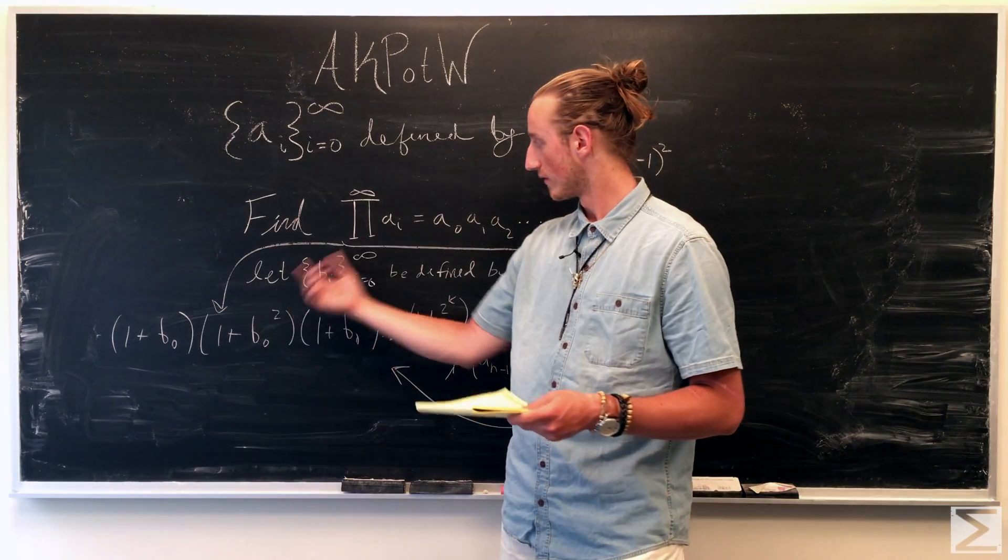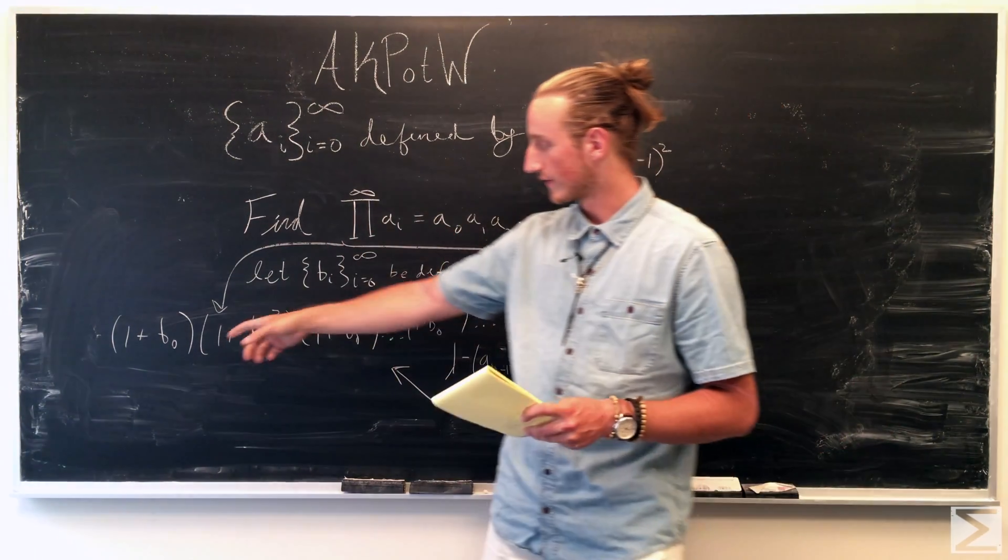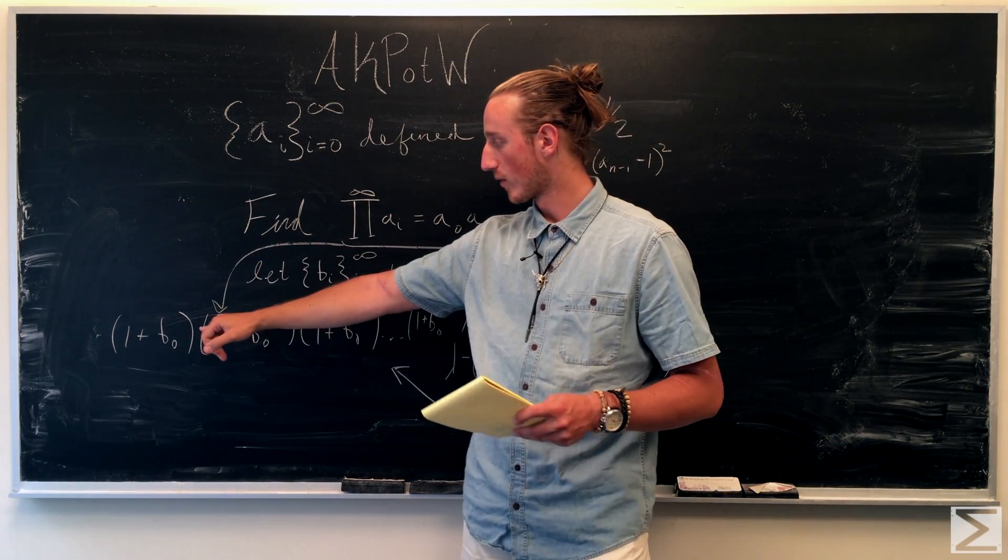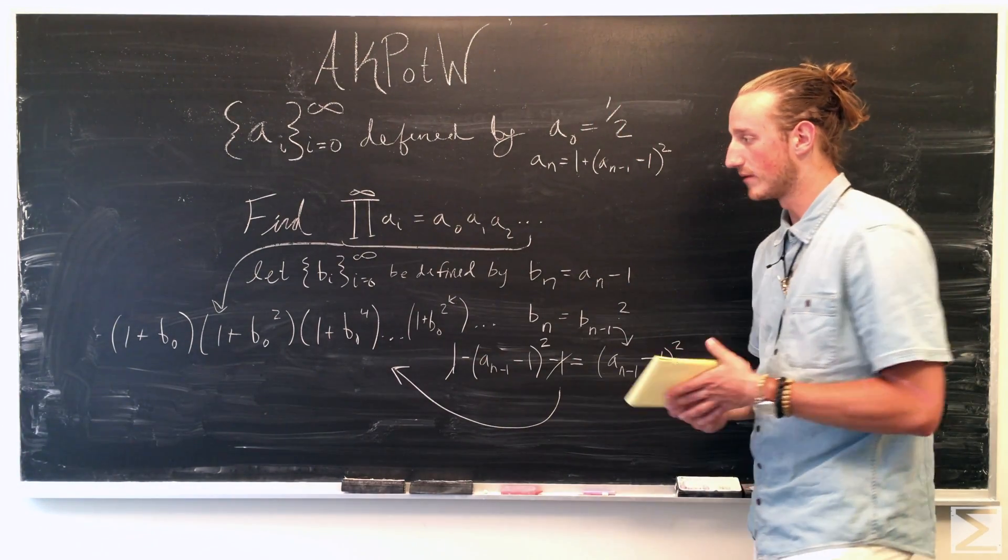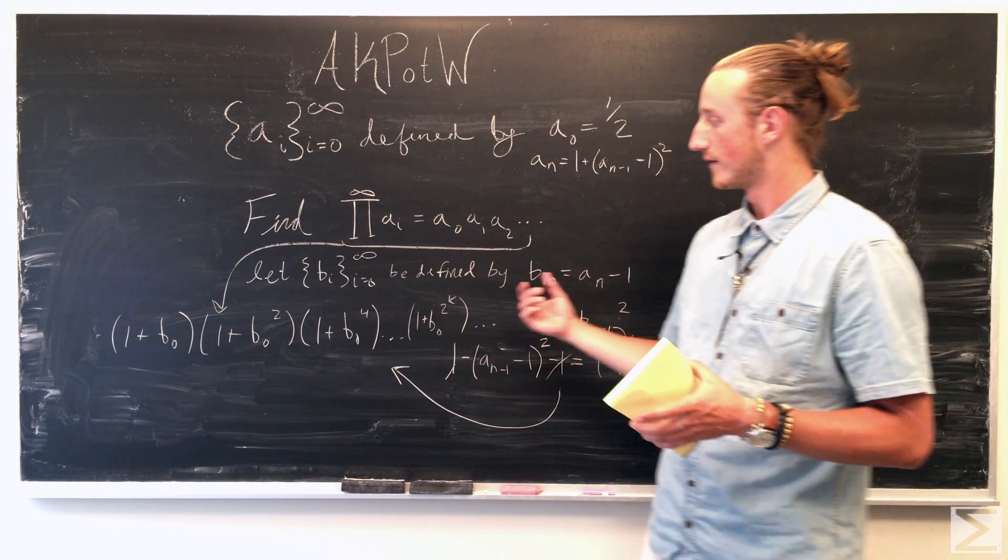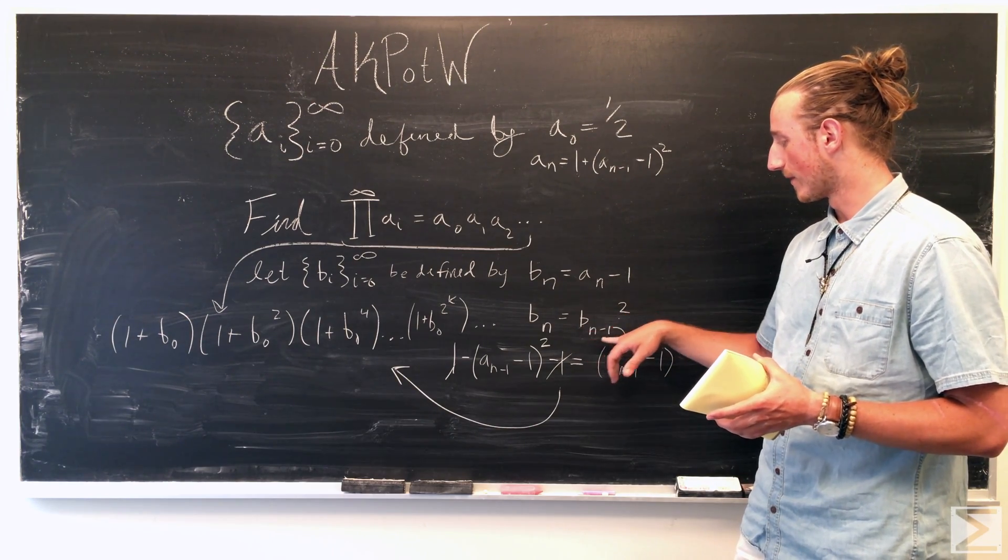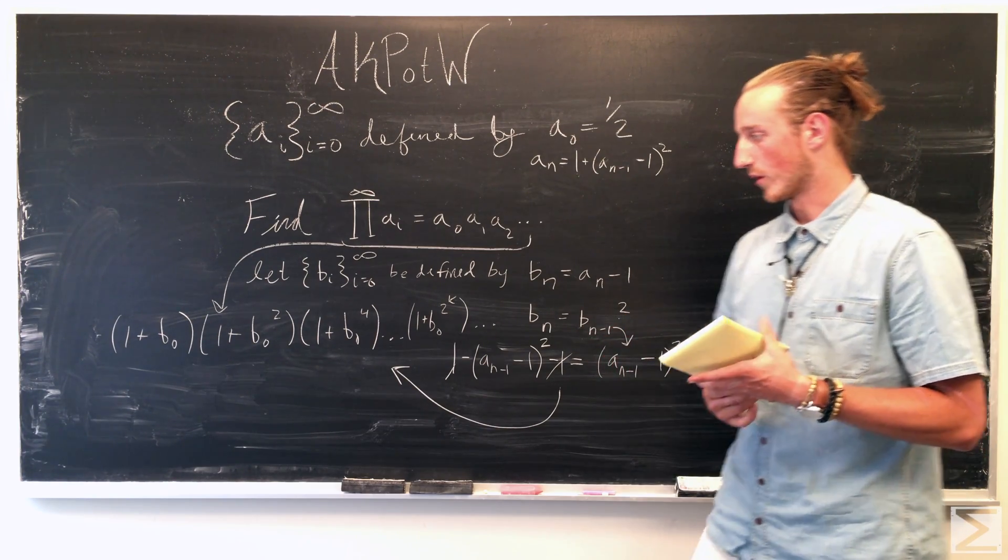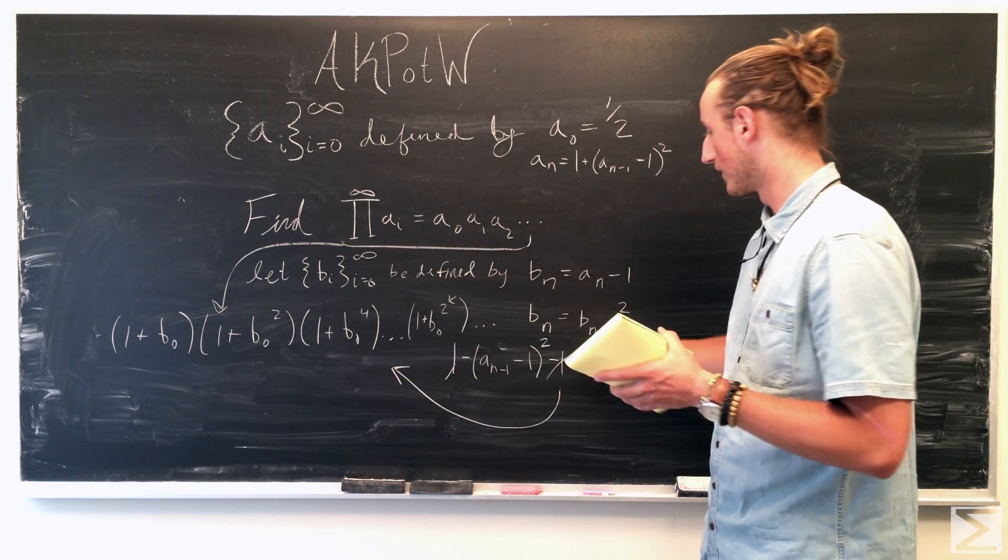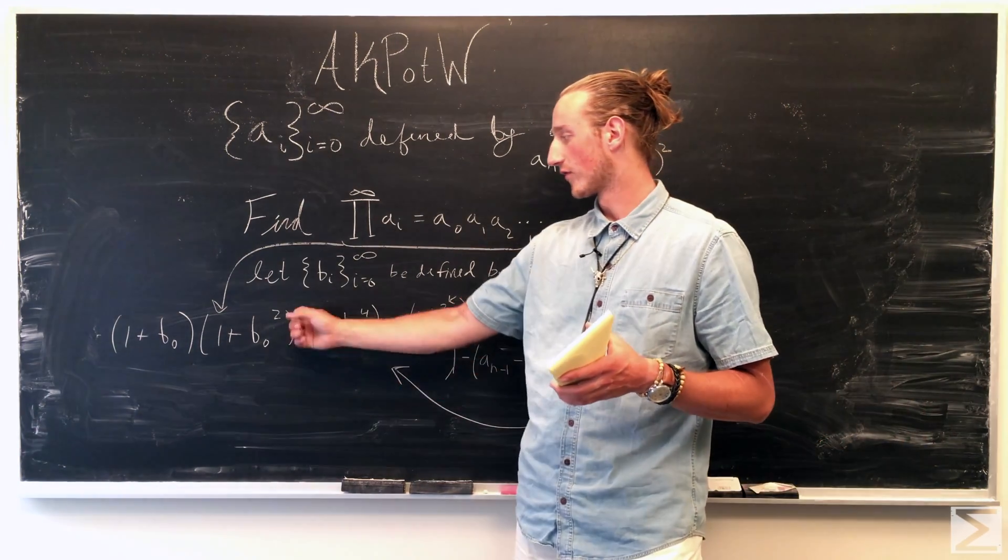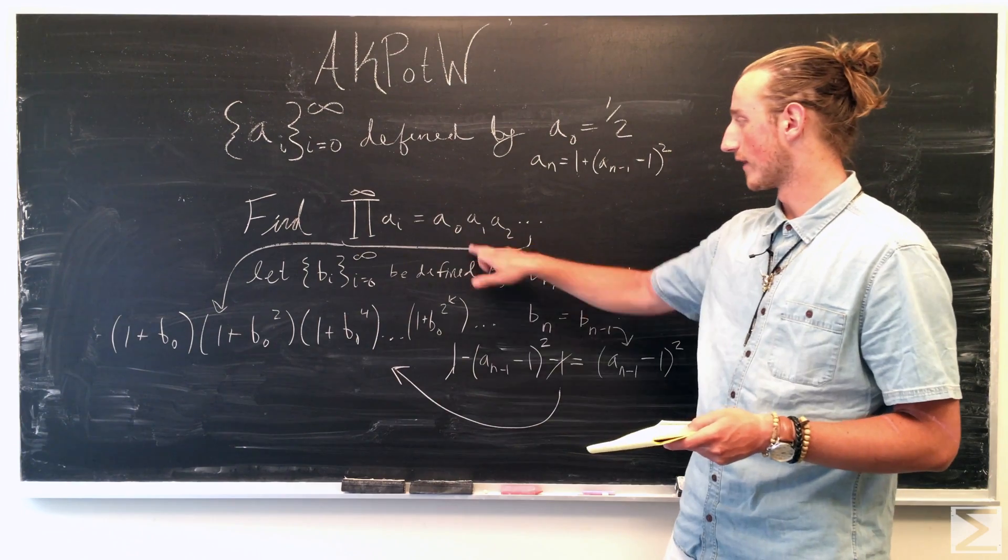So for b naught or a naught, b naught is going to be, a naught is going to be represented as one plus b naught. And then since we know that b sub n is equal to b of n minus one squared, we're going to plug in b naught again for b of n minus one, and then square that term to give us a one.